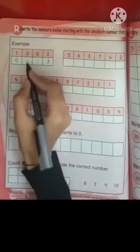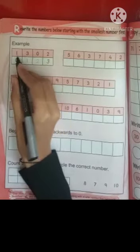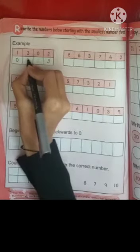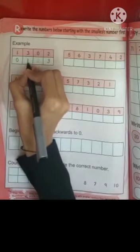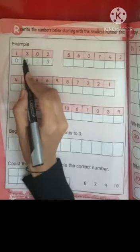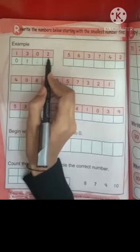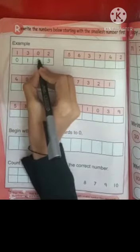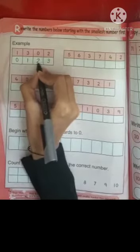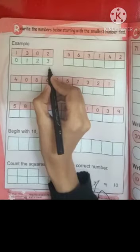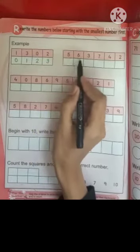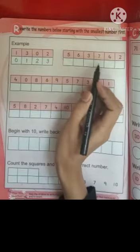Students, next smallest number is 1 and it is bigger than 0, so we will write here 1. The next smallest number is 2 and it is bigger than 1, so we will write here 2. Now we have arranged these numbers from smallest to biggest.